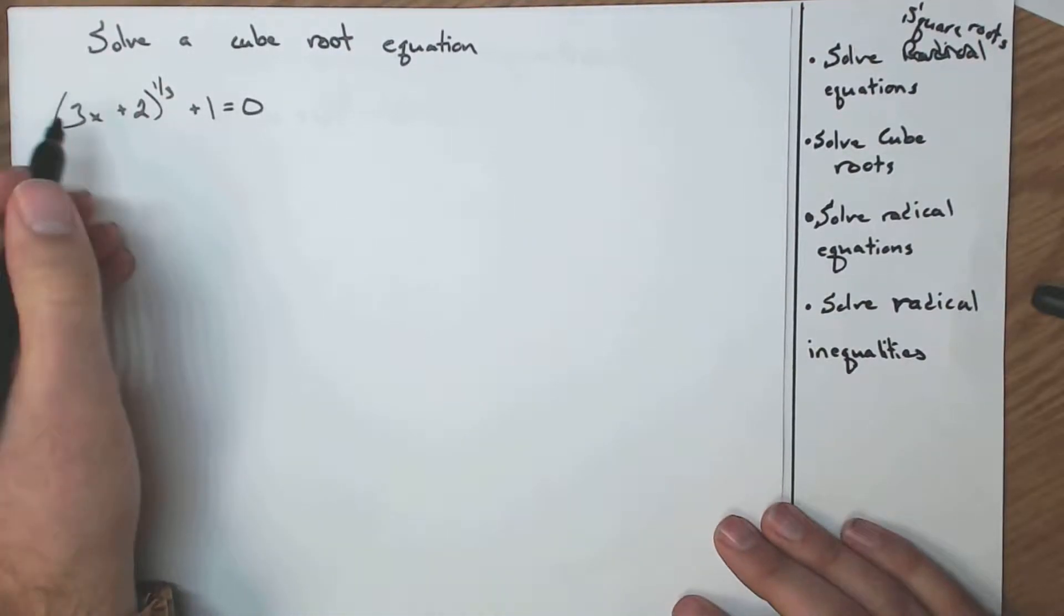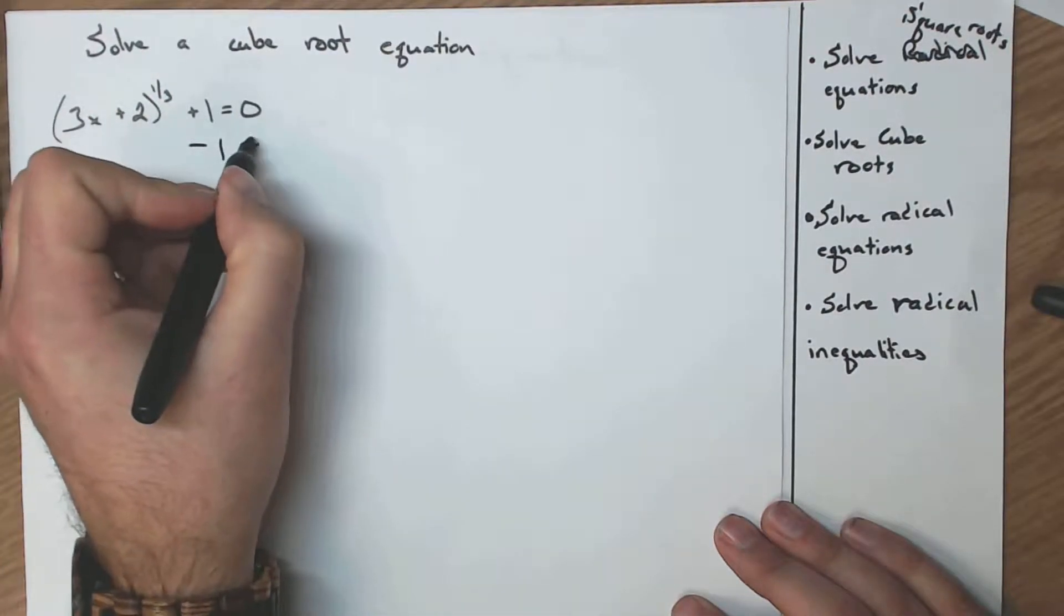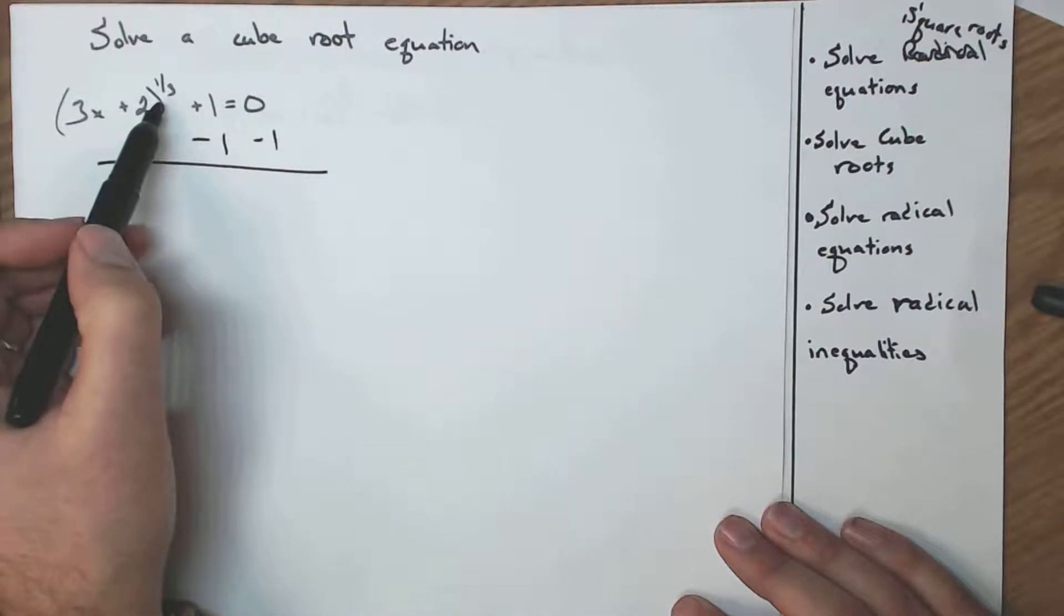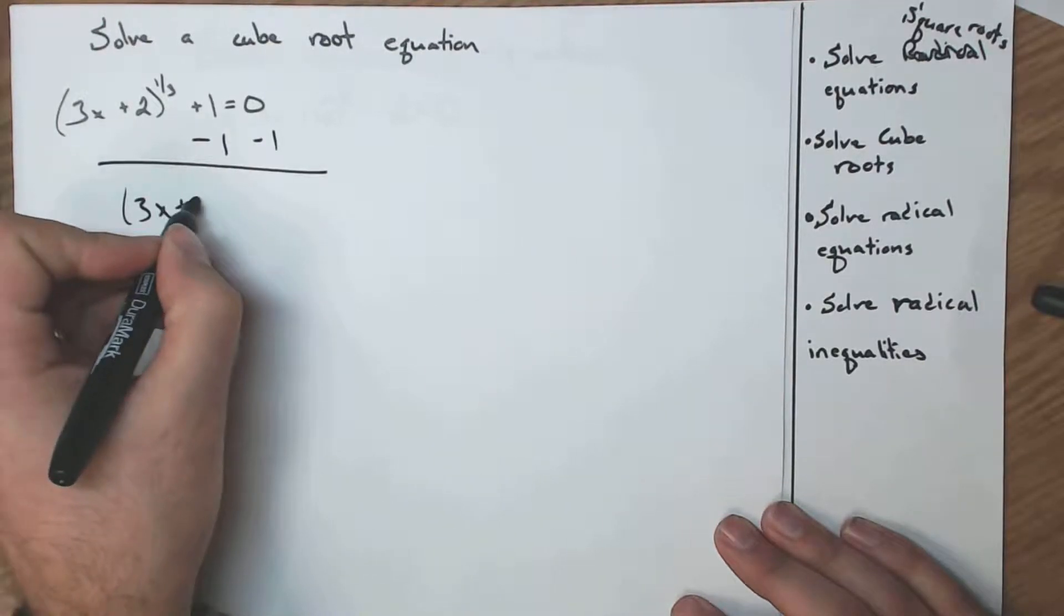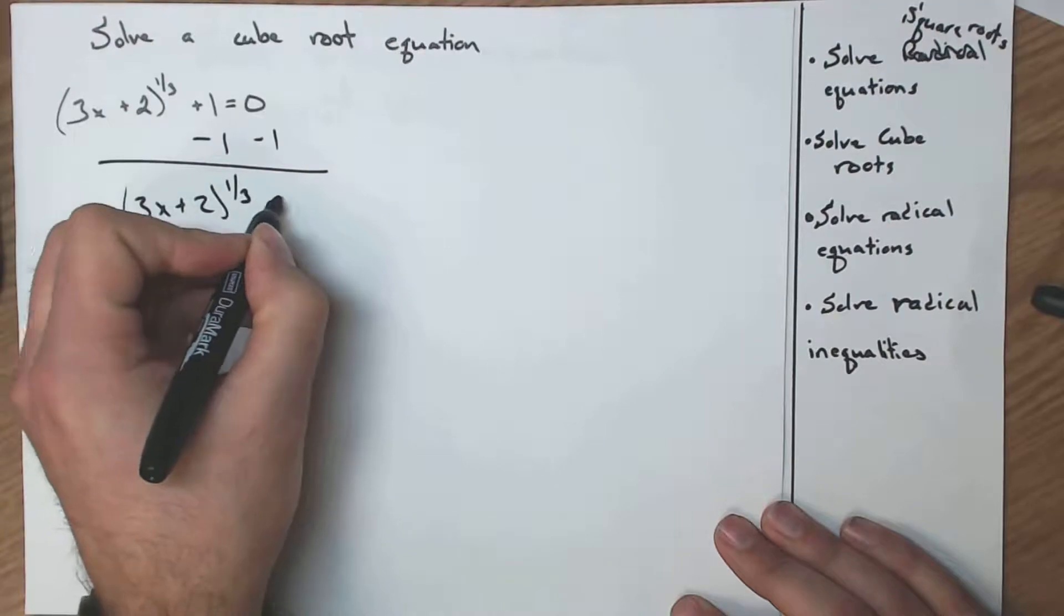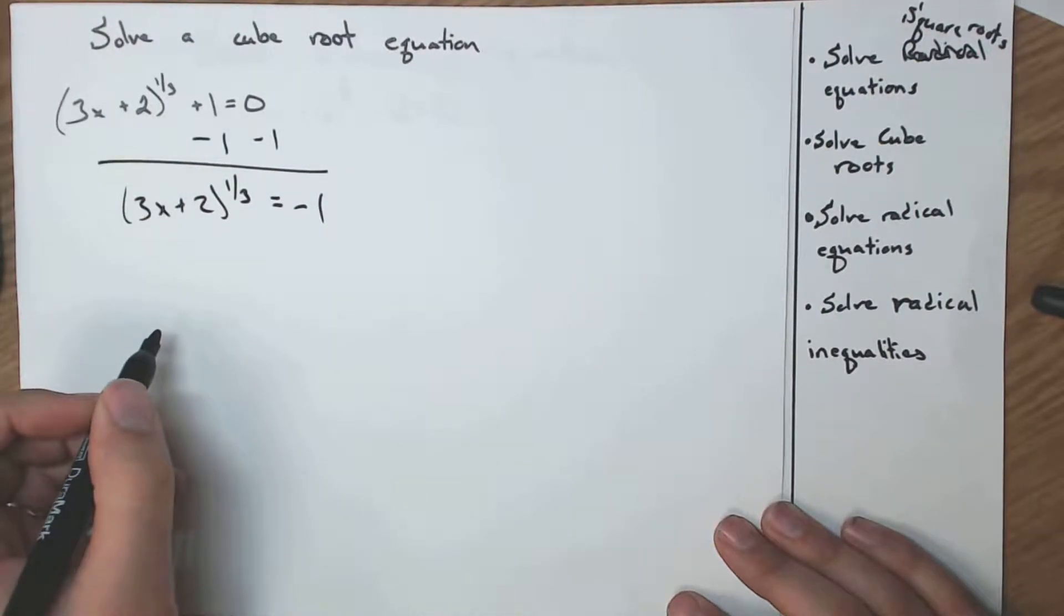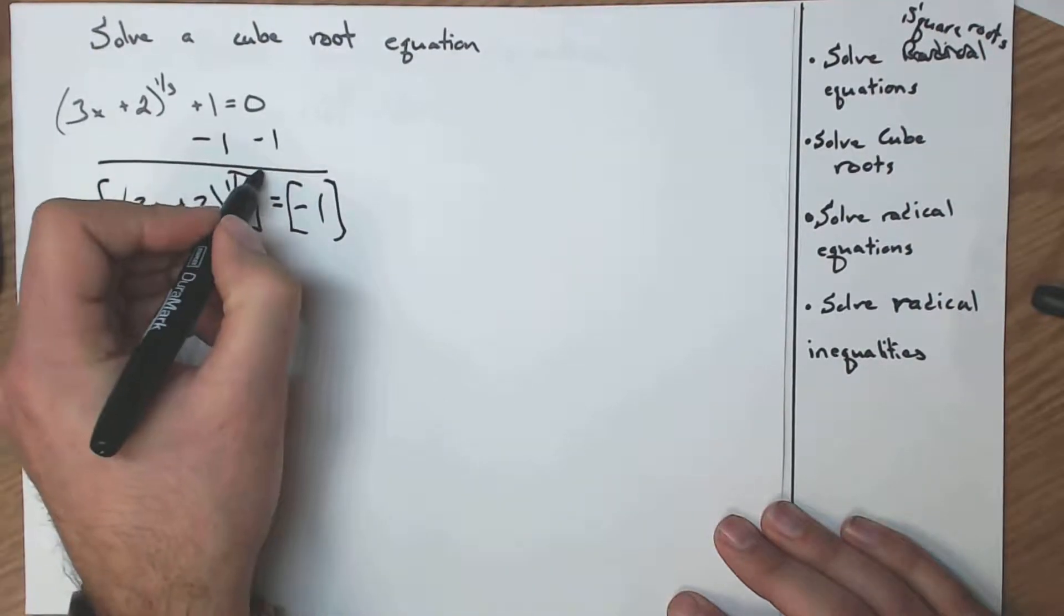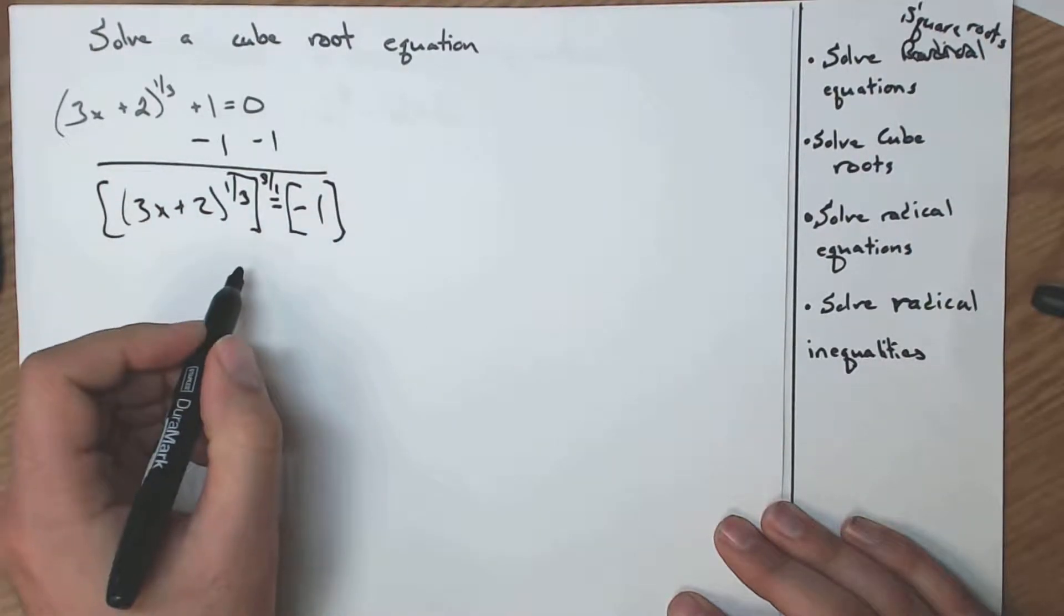Now let's solve a cube root equation. We start off by isolating the root. In this case, it's a third root, and it's written more like an exponent. And that's fine. We're in exponential form instead of radical form. No big deal. Now I have x plus 2 to the 1 third equals negative 1. I want to get rid of that exponent.